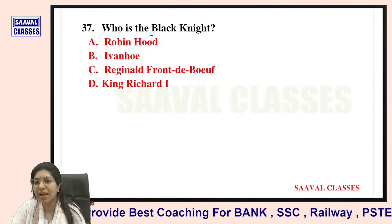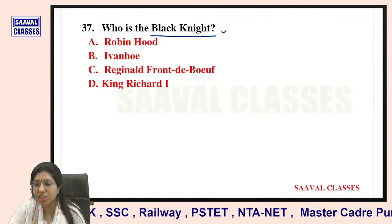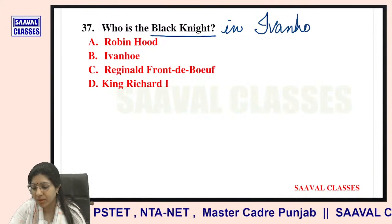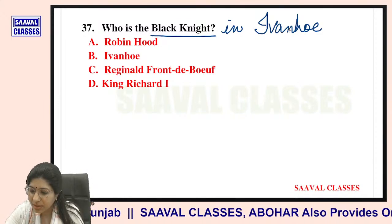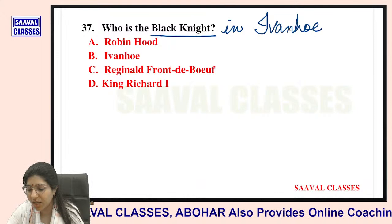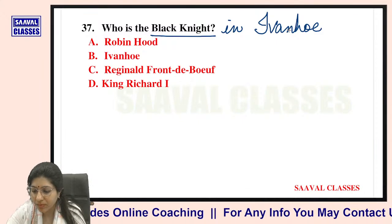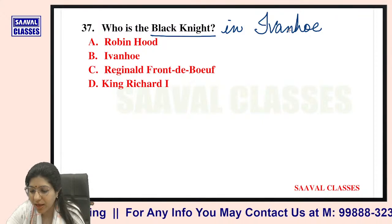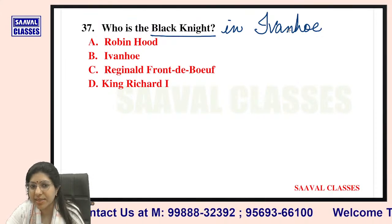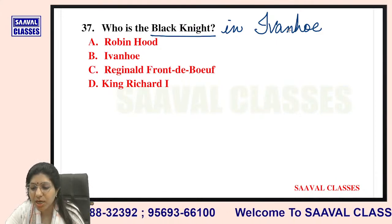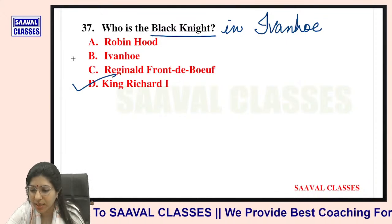Question number thirty-seven: Who is the Black Knight in Ivanhoe? Options are Robin Hood, Ivanhoe himself, Reginald Front-de-Boeuf, or King Richard I. The answer is King Richard I — bilkul sahih.